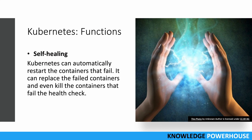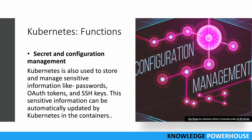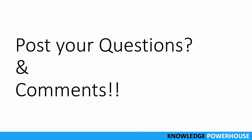Fifth, self-healing - if a container fails, Kubernetes can automatically restart it, replace failed containers, and even kill containers that fail health checks to save resources. Sixth, secret and configuration management - sensitive information like passwords, authorization tokens, and SSH keys can be automatically updated by Kubernetes in containers using config maps, eliminating the need to manually update this information across thousands of containers.